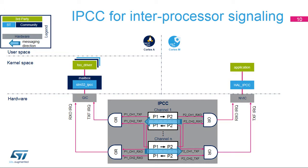It is important to understand that the IPCC peripheral does not manage any buffer — it works only like a doorbell. The RPMSG messaging uses two bidirectional channels. A channel is used in one direction to inform that an RPMSG buffer is available, and in the other direction to inform that the RPMSG buffer has been released. In the STM32-MPU embedded software distribution, IPCC Channel 1 is used for messages from the Cortex-M4 to Cortex-A7 core, and IPCC Channel 2 is used for messages from the Cortex-A7 to Cortex-M4 core. On Cortex-A7, the IPCC is controlled by the mailbox software framework. On Cortex-M4, the IPCC is controlled by the HAL IPCC software driver.